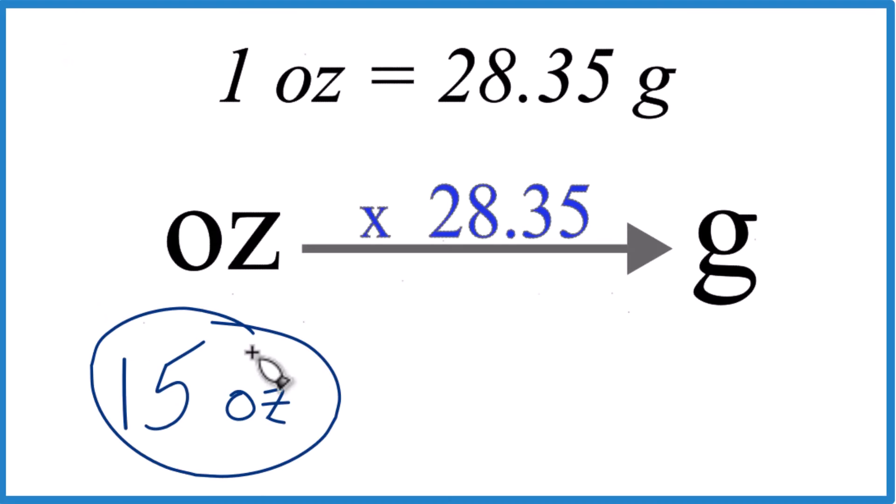So if you have 15 ounces and you want to get that to grams, here's how you can do it. One ounce equals 28.35 grams.